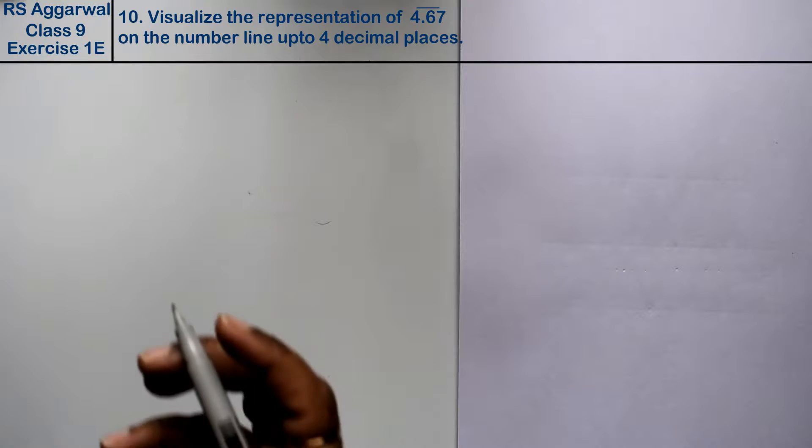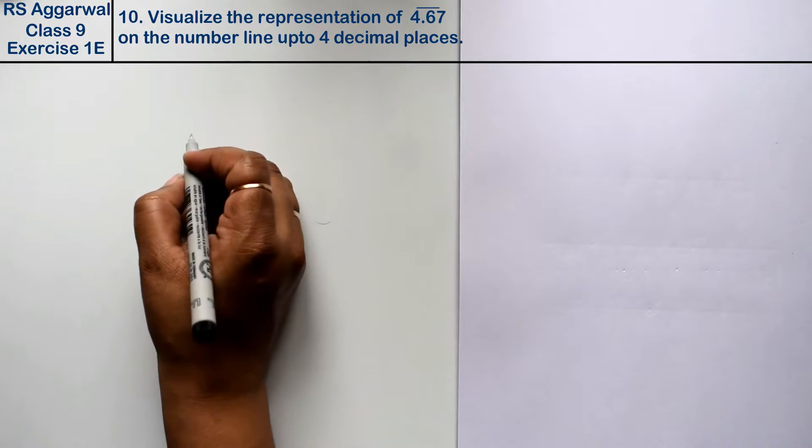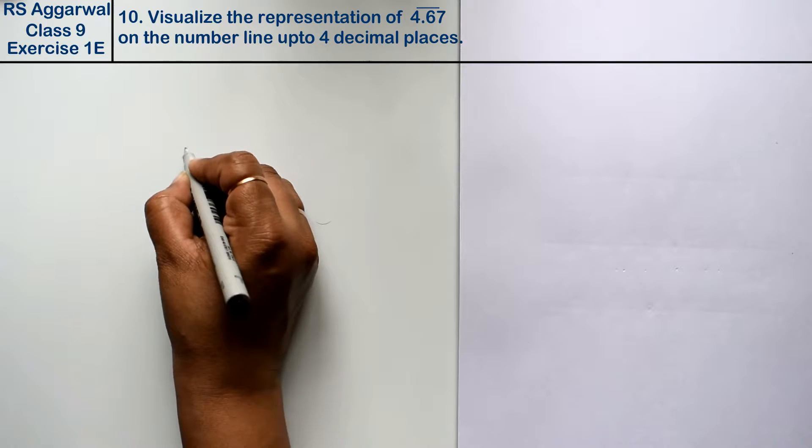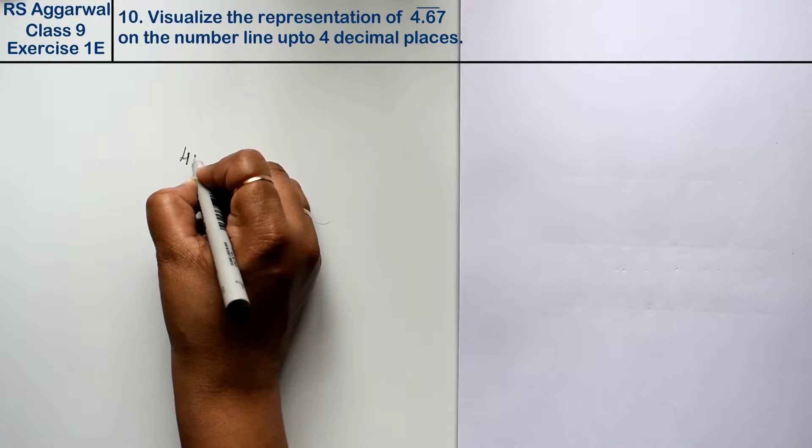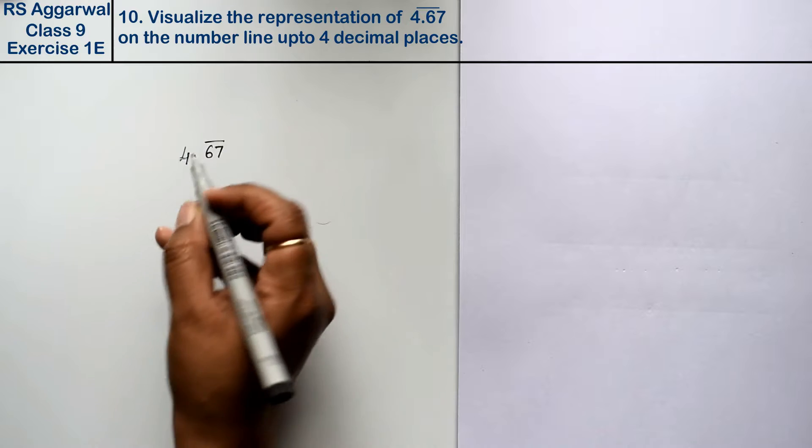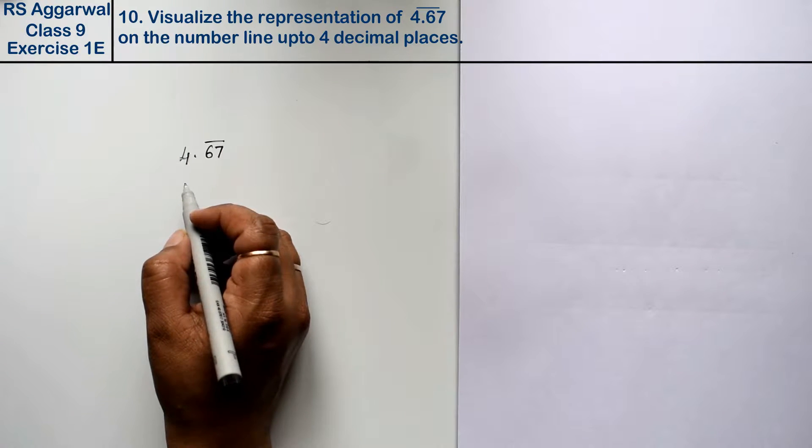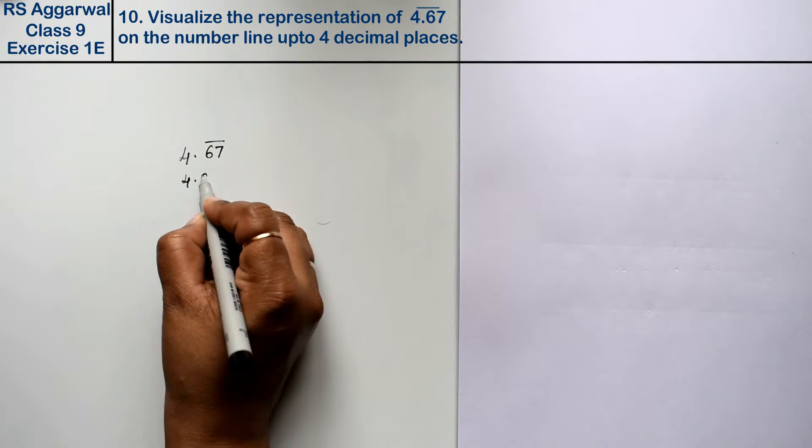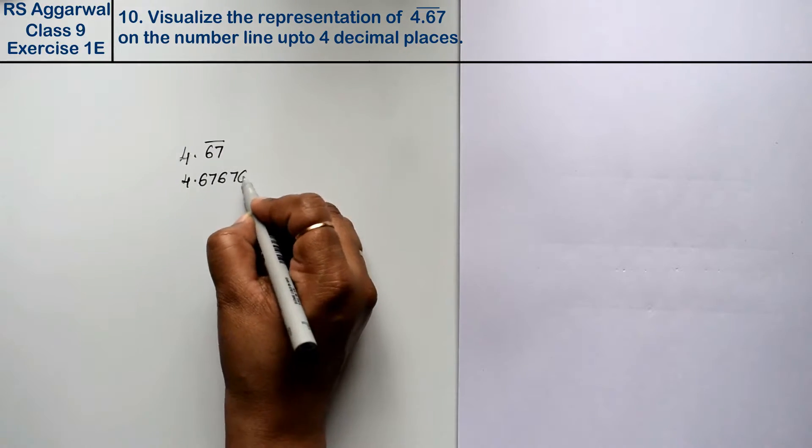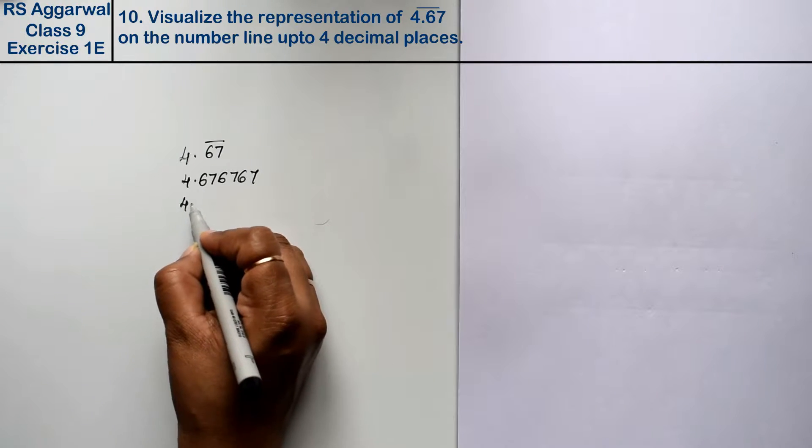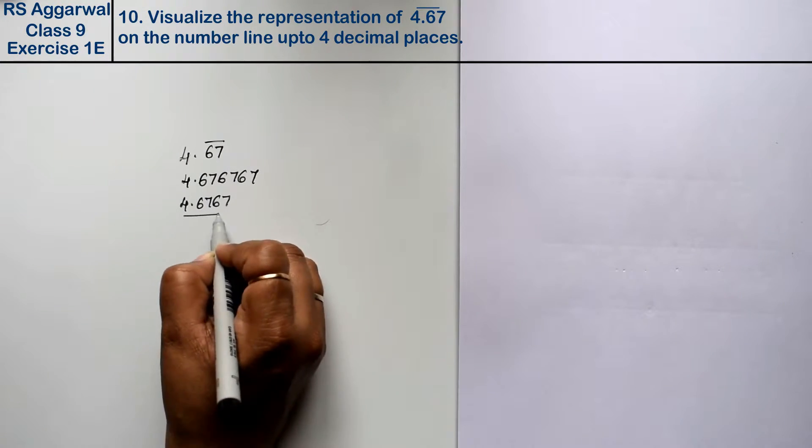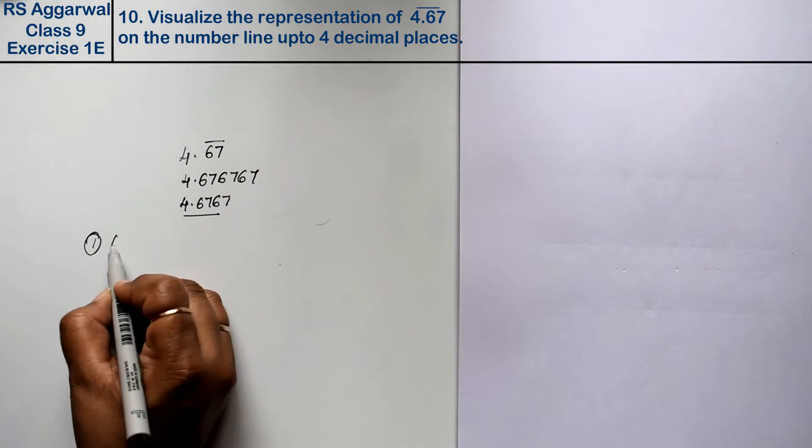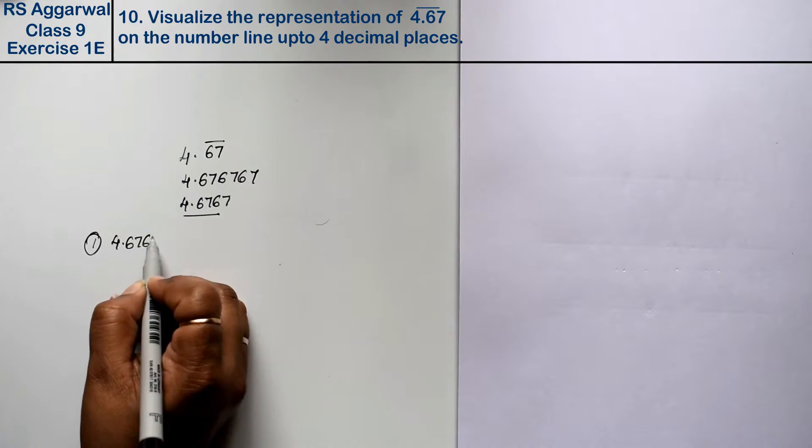Let's do question number 10 of exercise 1E, that is number system. Question number 10 is visualize the representation of 4.67 with bar on the number line up to 4 decimal places. To 4 decimal places means that this value is repeated, so we have to do 4 decimals, that means 6767.